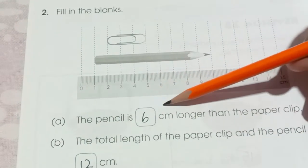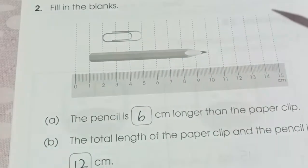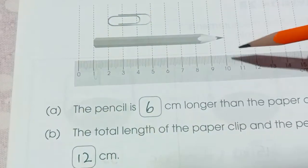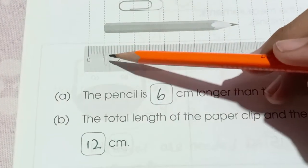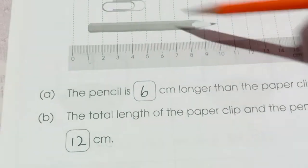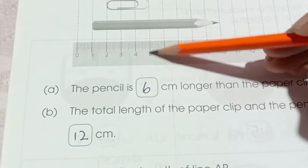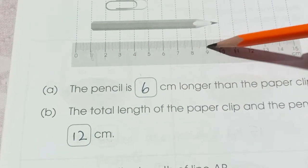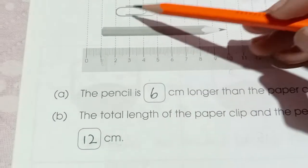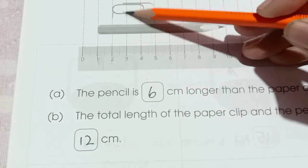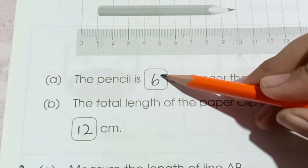The pencil is dashed centimeter long than the paper clip. So we have the pencil from here to here. We are going to count this from 0 because the scale is started from the 0. 0, 1, 2, 3, 4, 5, 6, 7, 8, 9. And the paper clip is 0, 1, 2, 3. 9 minus 3 is 6.